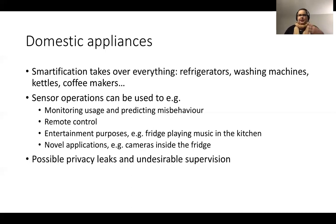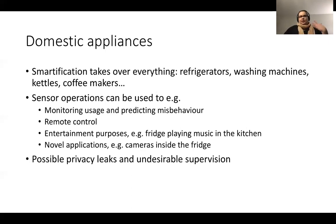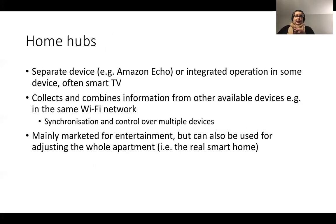One option to address privacy is to use edge computing to perform all the analysis and machine learning in your local home environment or the same building, so that data is never sent out to the public internet. Of course there are appliances where you need large-scale data processing and then the cloud environment is the only option, but we need to consider privacy and security highly in smart home environments.